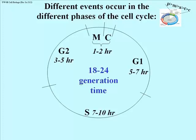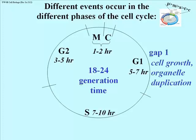Unique events occur during each phase. In Gap 1, cells grow very rapidly. Organelles will duplicate — ribosomes, mitochondria, and in plant cells, chloroplasts will duplicate as well. In other words, if you're going to grow a cell, a larger cell must have proportionally as many components as a smaller cell.